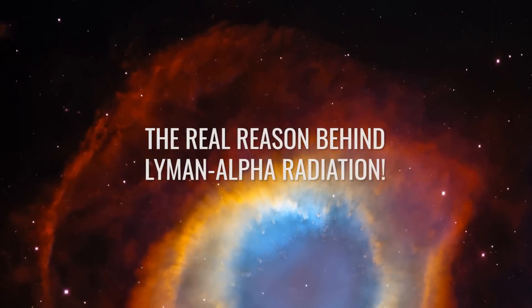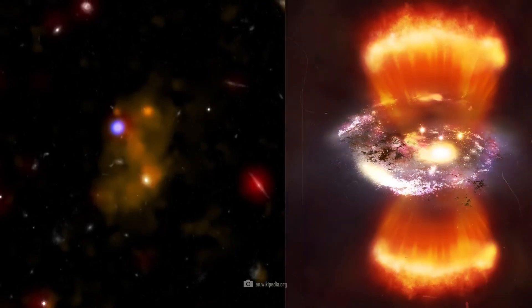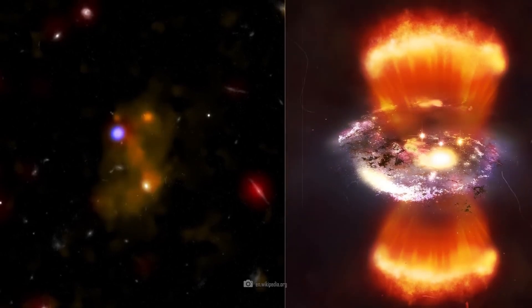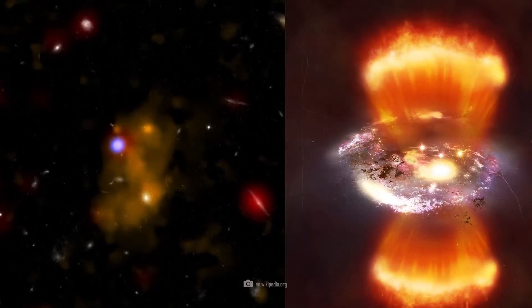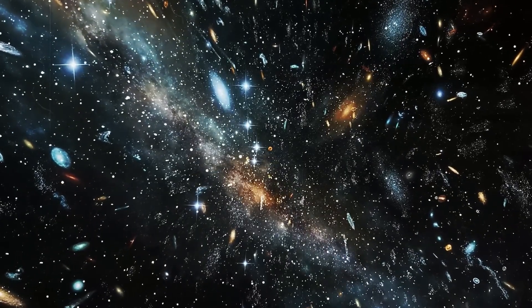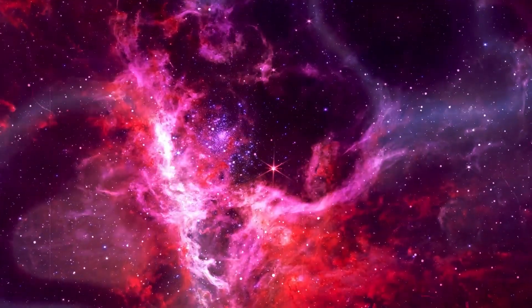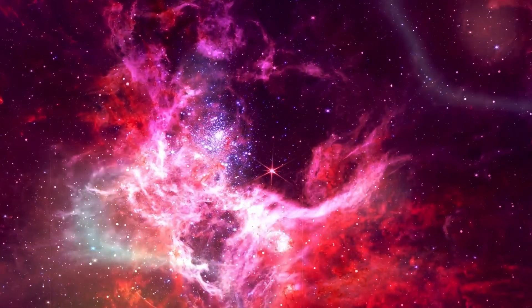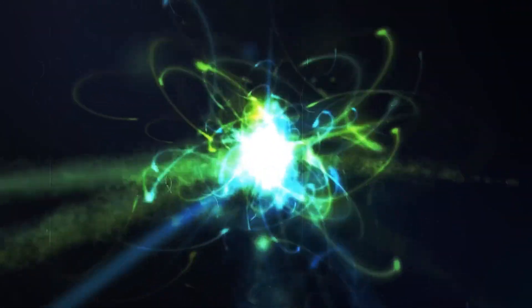The real reason behind Lyman-alpha radiation. What is certain is that Lyman-alpha galaxies play a crucial role in the study of early galaxy formation and evolution. Now, we just need to find out what exactly these emissions are telling us. Lyman-alpha emissions are produced by the transition of electrons in the hydrogen atom and are normally found in the ultraviolet spectrum.